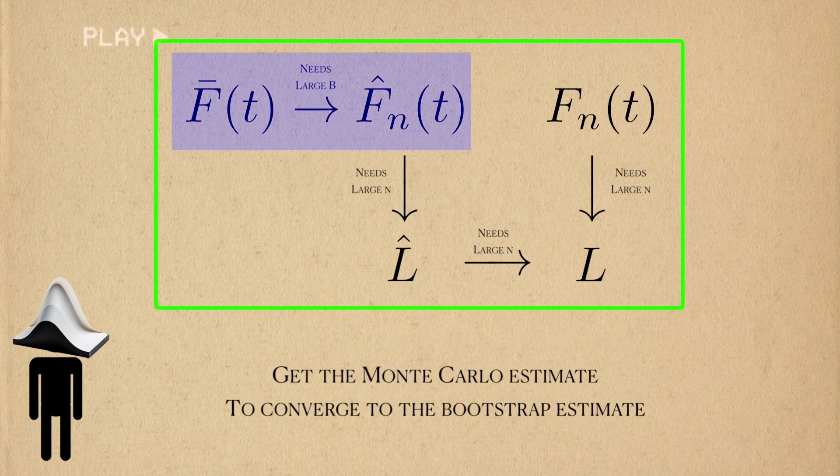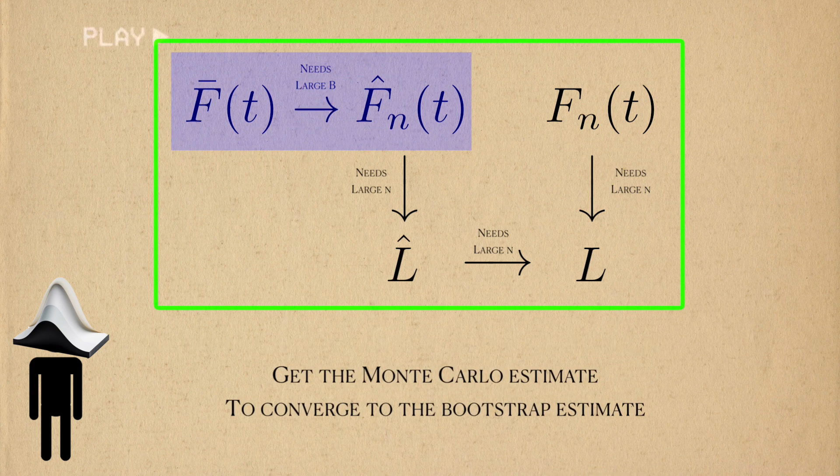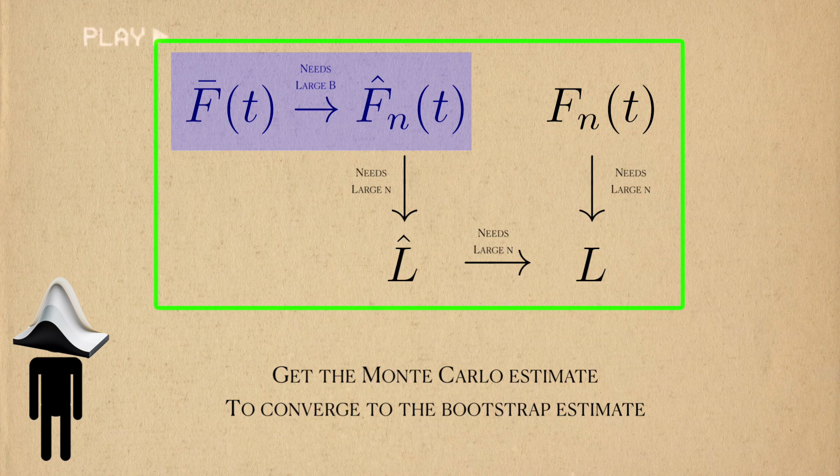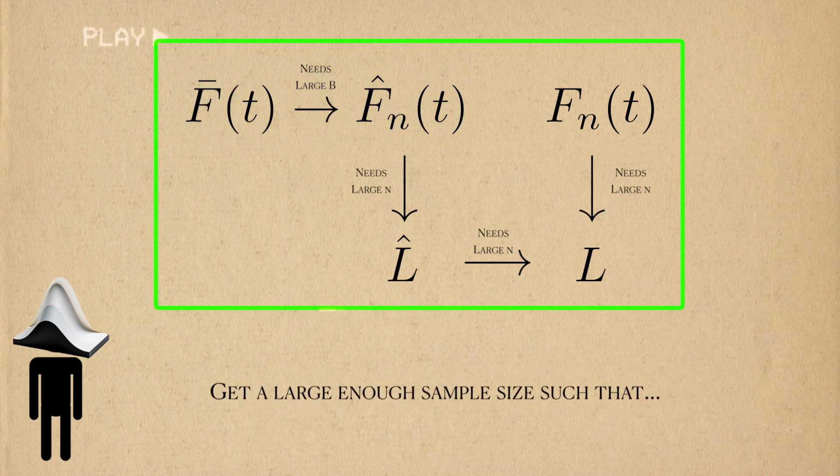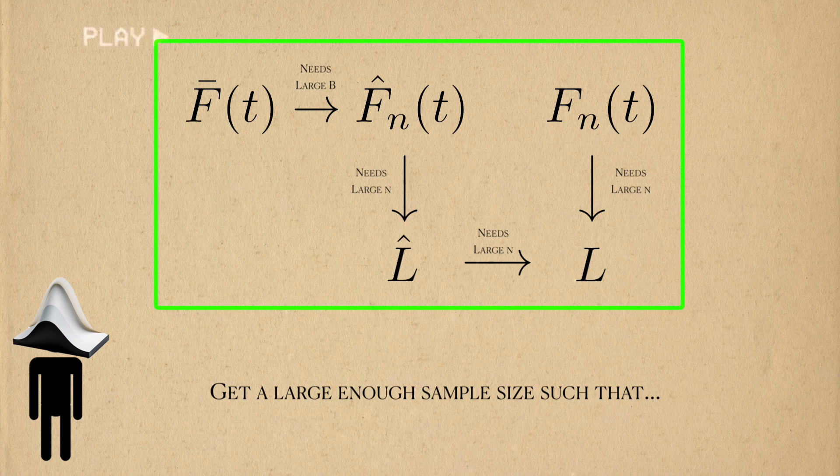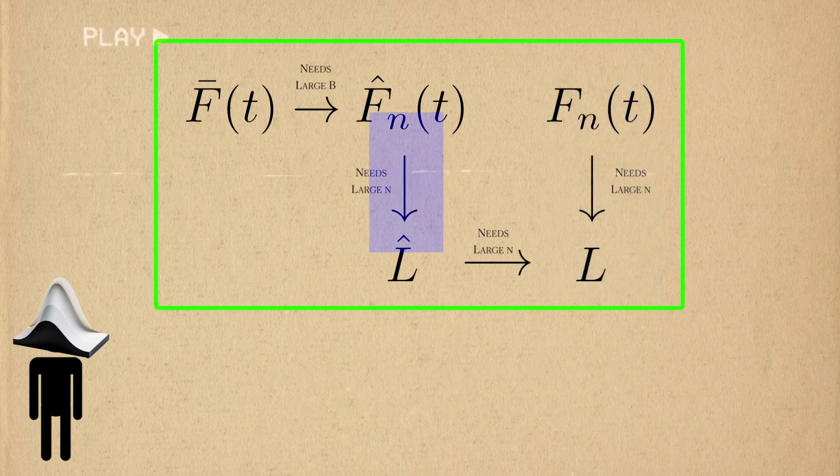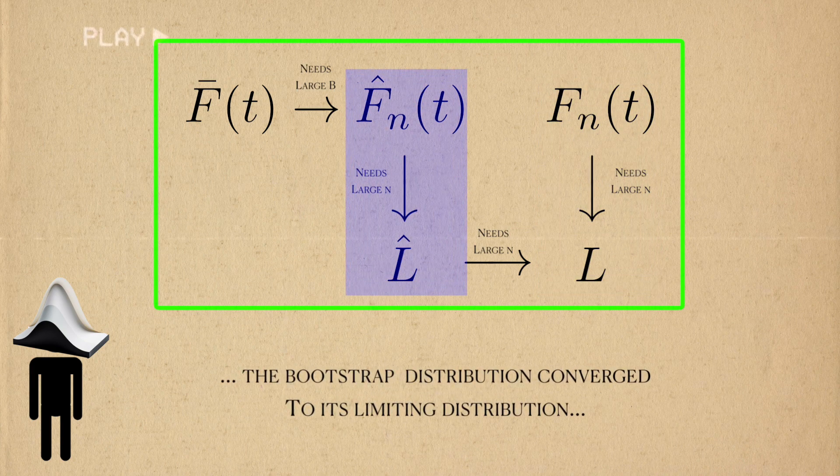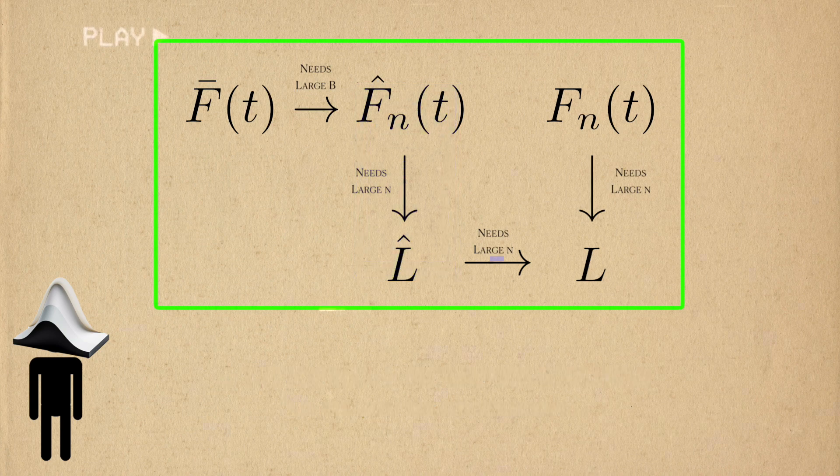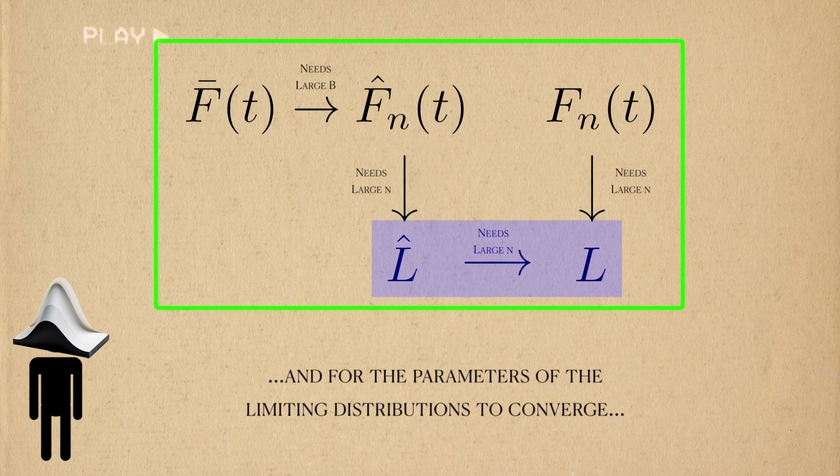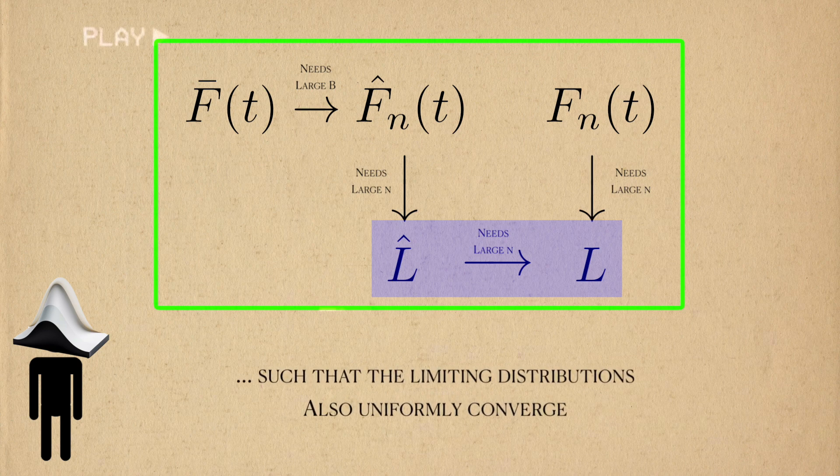To sum it all up, first, we needed to take a large enough number of bootstrap datasets for the Monte Carlo estimate to converge to the bootstrap estimate. We needed the sample size of the original sample to be so large that three things could happen: one, for the sampling distribution to go to its limiting distribution; two, for the bootstrap distribution to go to its limiting distribution; and three, for the bootstrap variance to converge to the population variance such that the limiting distributions also uniformly converge.